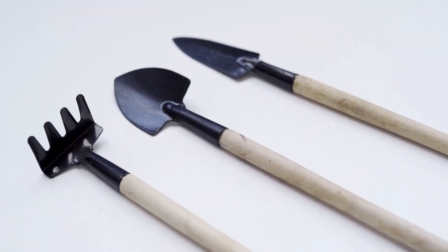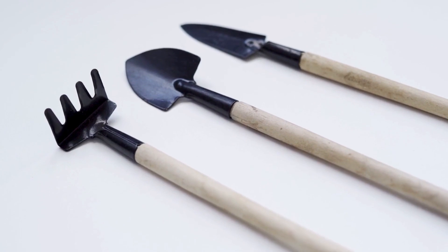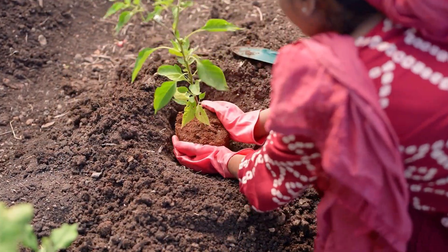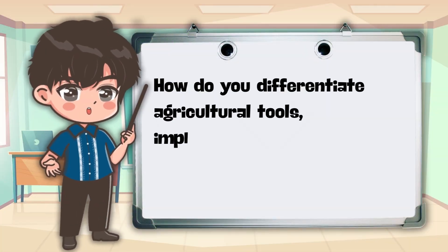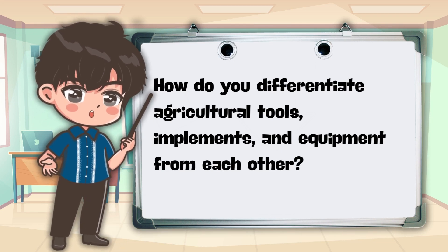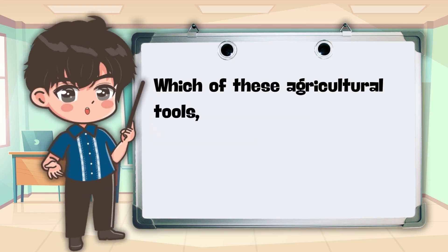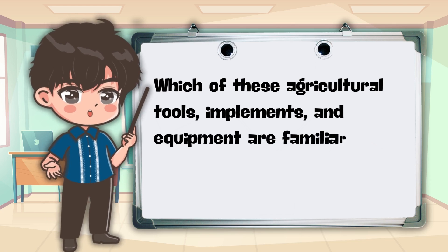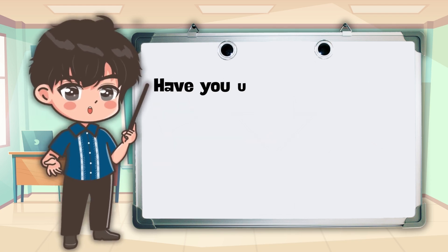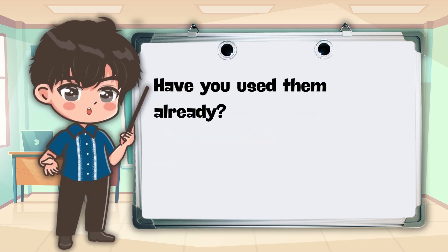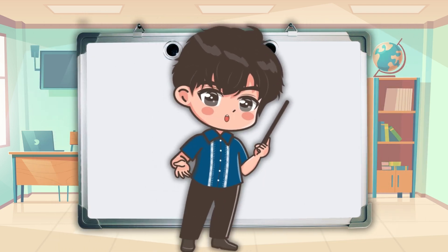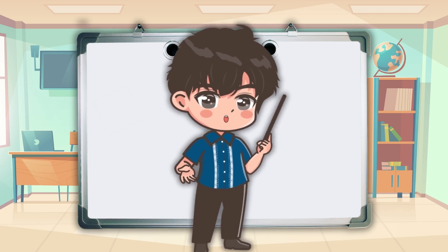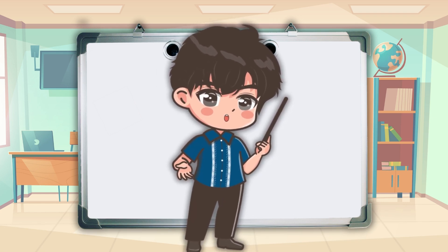In this section, it is important to determine the uses and functions of various agricultural tools, implements, and equipment in cultivating crops, as well as their differences. How do you differentiate agricultural tools, implements, and equipment from each other? Which of these are familiar to you? Have you used them already? How and when do we properly use them? Let us identify the following tools, implements, or equipment by looking at the video and their corresponding functions.